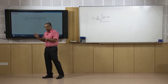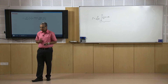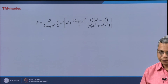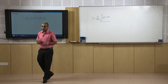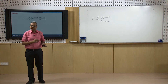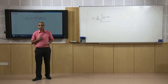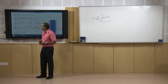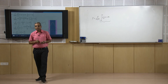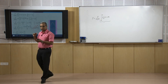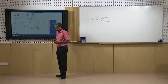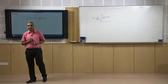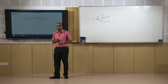For TM modes, the same analysis can be done and the power associated with TM modes is given by a similar expression. Although the power was derived using the example of symmetric modes, these expressions are valid for anti-symmetric modes as well. So this is how we get the power associated with a mode, and these powers are in watts per meter — power per unit length in the y direction.